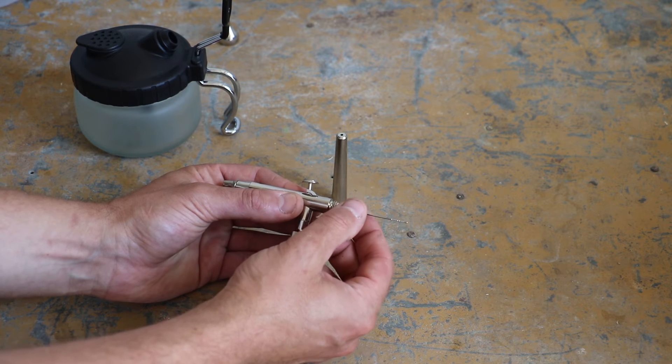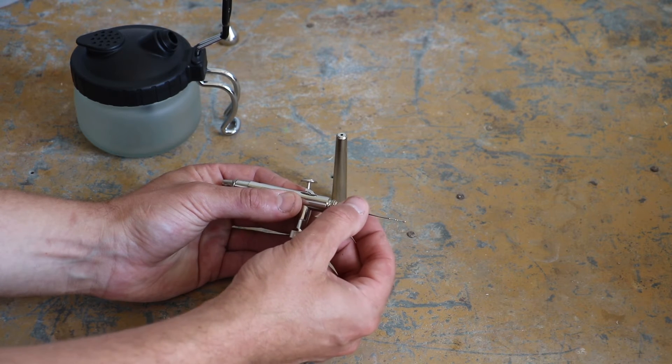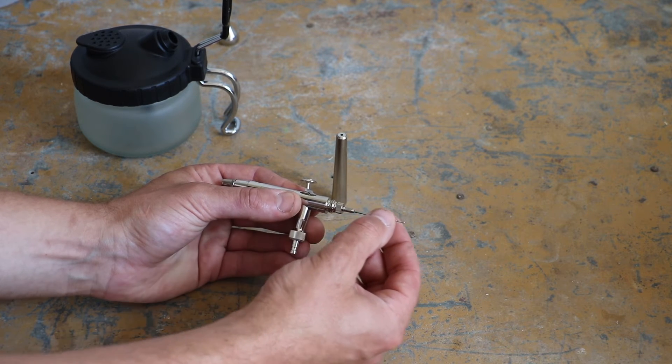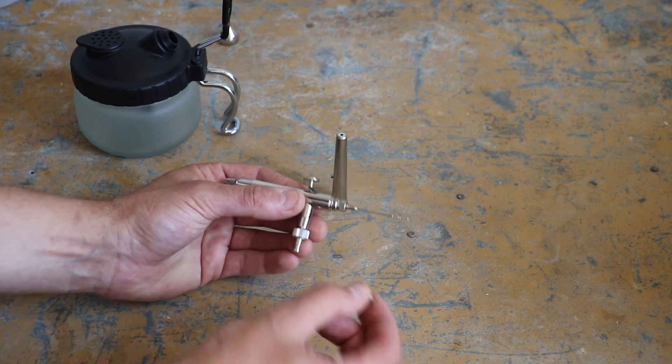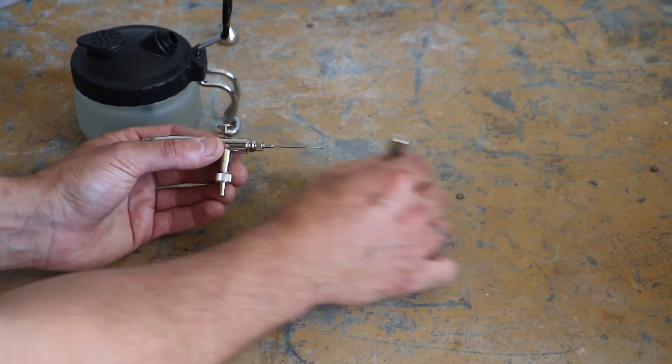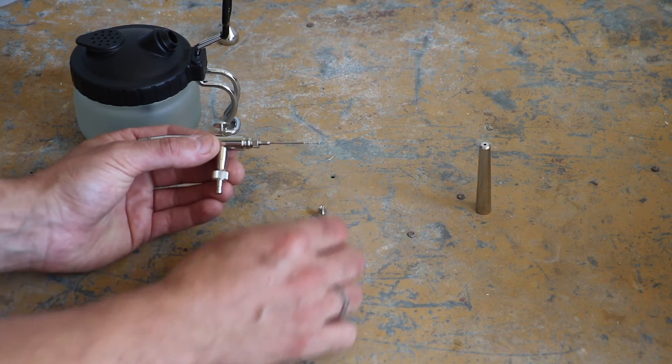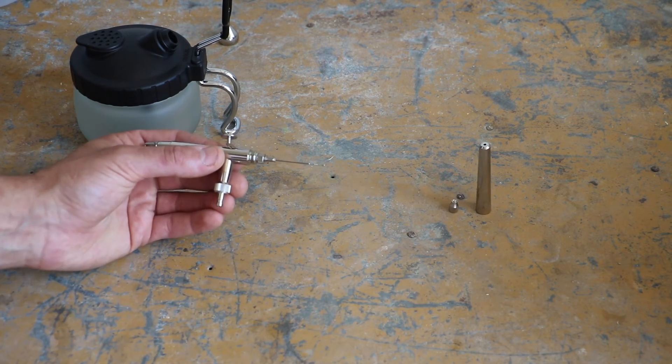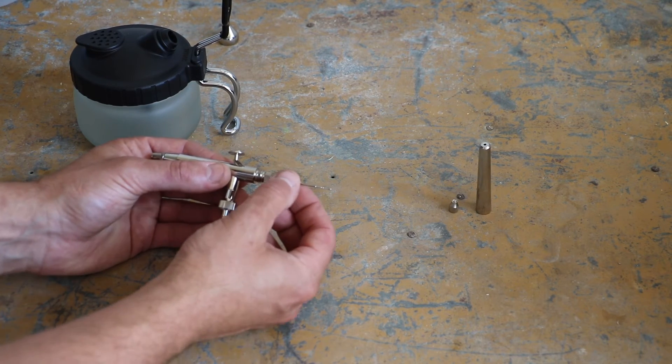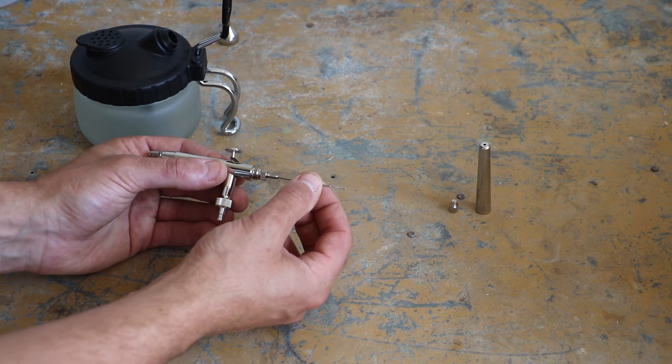So what we're going to do is we're going to undo that that is the securing nut and we're just going to pull that off and this is as simple as that. So let's start getting these in some kind of order so we know what order to put them back in again.